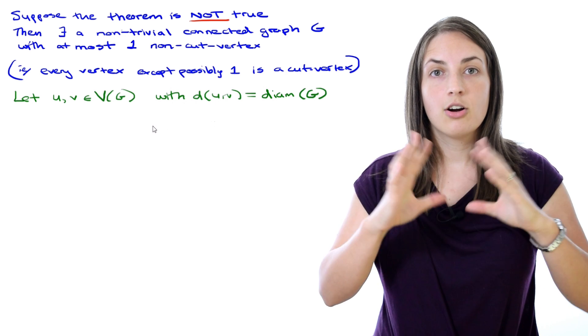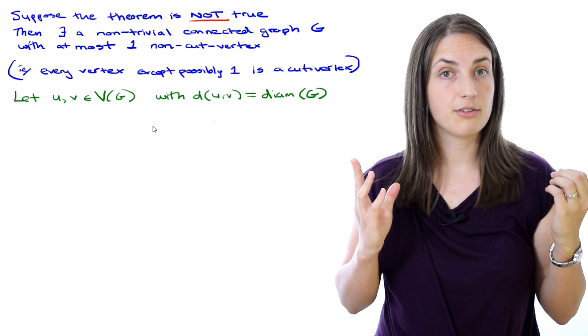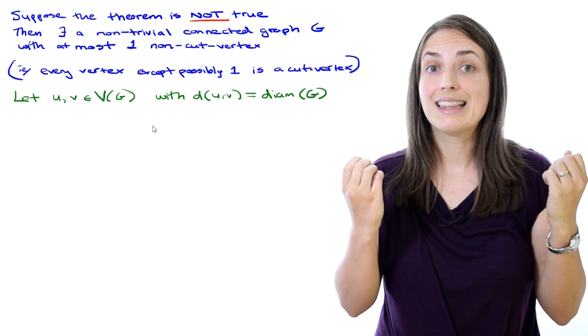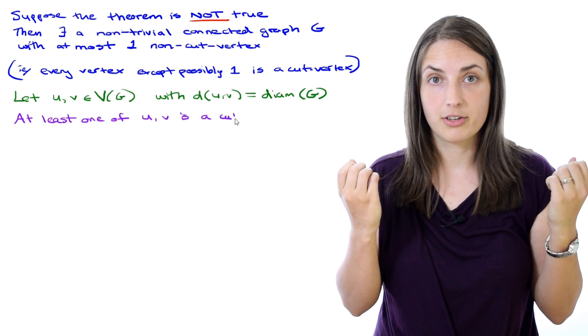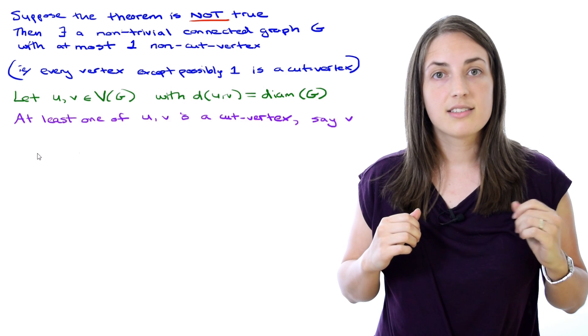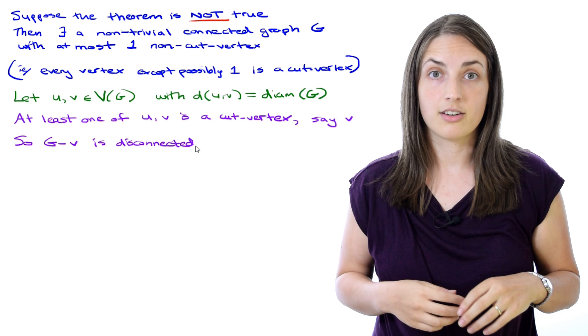Now remember that in our graph every vertex is a cut vertex except possibly for one of them, which means that if we're looking at u and v, at least one of them has to be a cut vertex. Let's say that one is v. If v is a cut vertex, that means removing it will disconnect our connected graph.